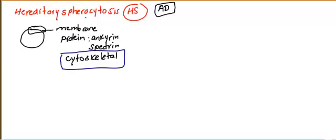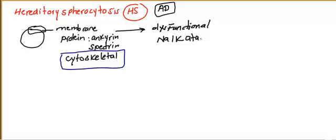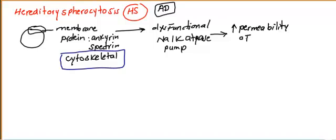What is the result of this membrane abnormality? This membrane abnormality leads to dysfunctional NaK ATPase pump. That means these red blood cells have increased permeability to sodium and water.